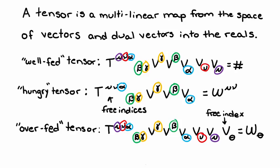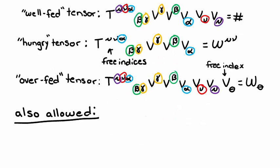Notice that we don't have to contract every single index with its own individual vector. We can also have tensors like this, or like this.